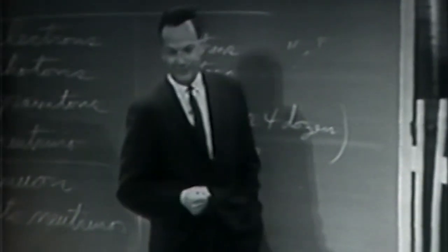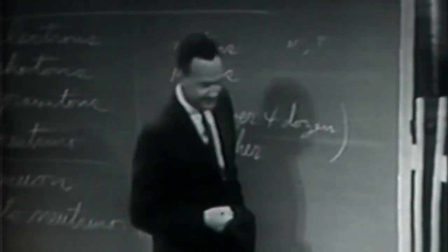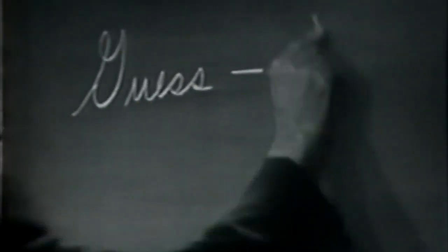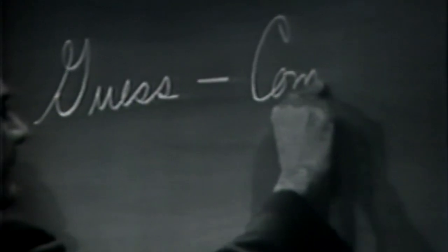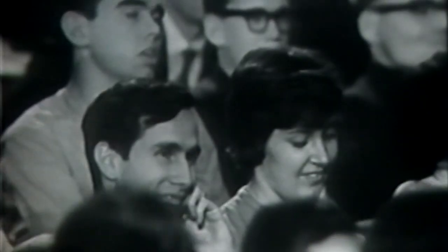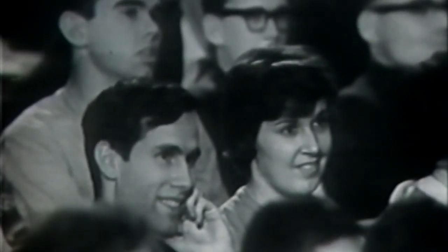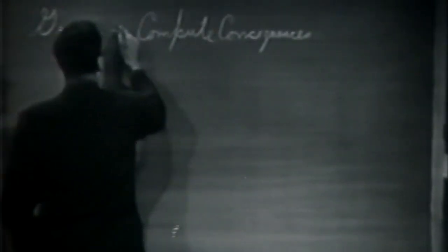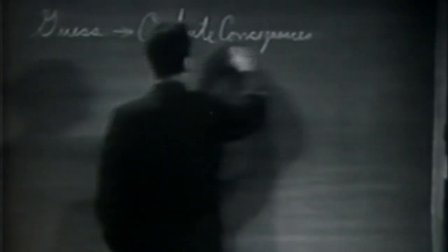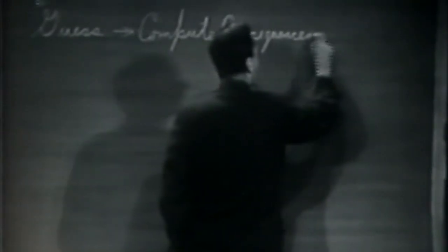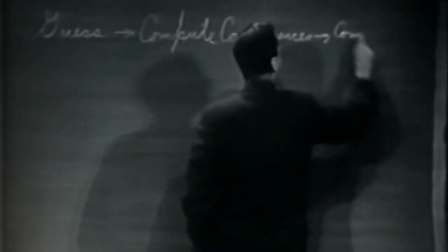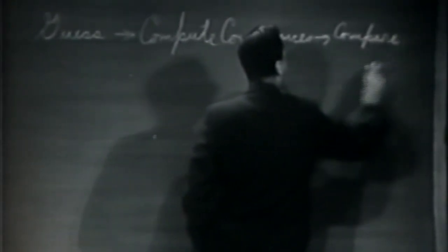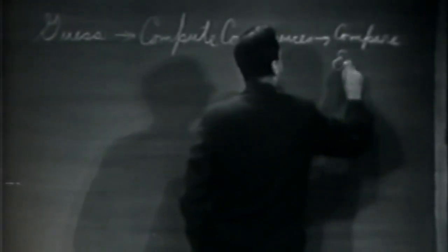Now I'm going to discuss how we would look for a new law. In general, we look for a new law by the following process: first we guess it — and don't laugh, that's really true. Then we compute the consequences of the guess to see what, if this law that we guessed is right, what it would imply.